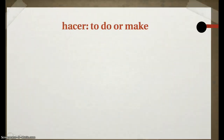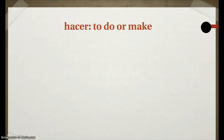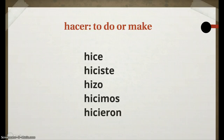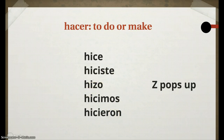Here's our first one. Hacer, to do or make. In the preterite, it turns into hice, hiciste, hizo, hicimos, hicieron. And as you can see, a Z pops up out of nowhere.